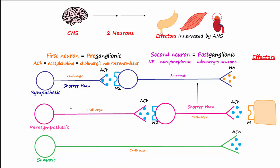The effectors innervated by somatic motor neurons are skeletal muscles, and they also express cholinergic receptors called nicotinic 1, or N1, receptors. The adrenergic receptors located on effectors innervated by the sympathetic nervous system can be either alpha or beta receptors.